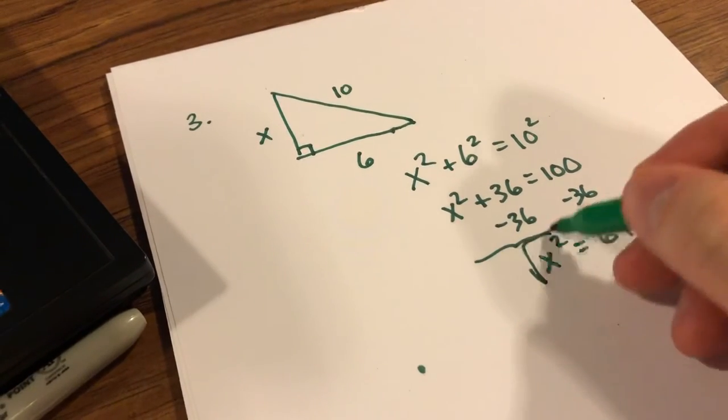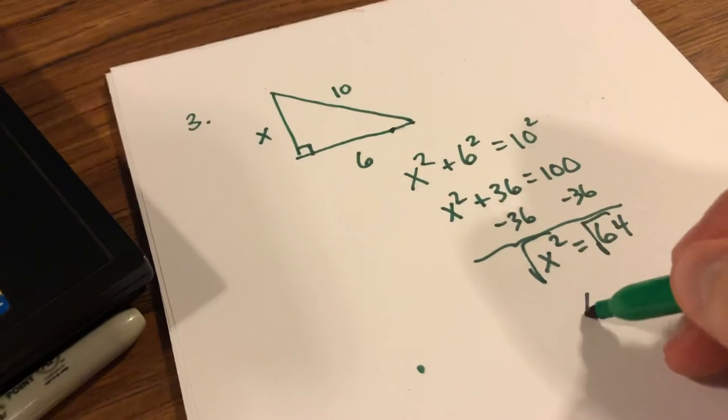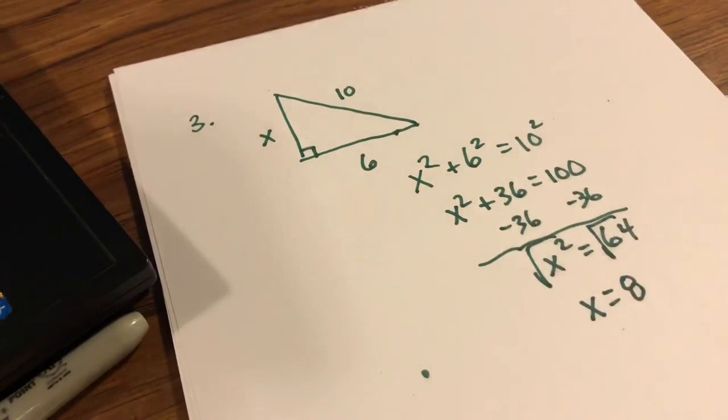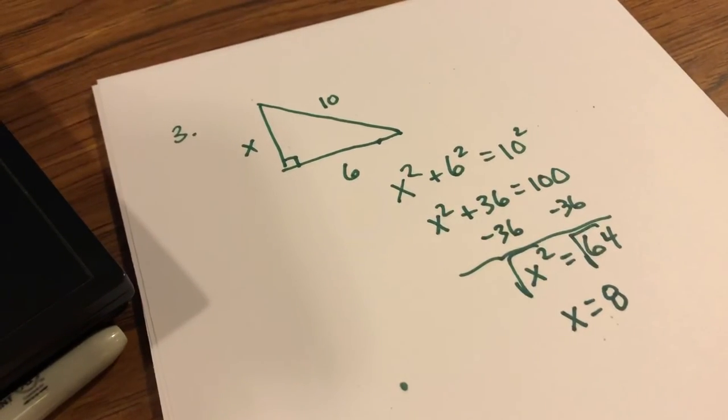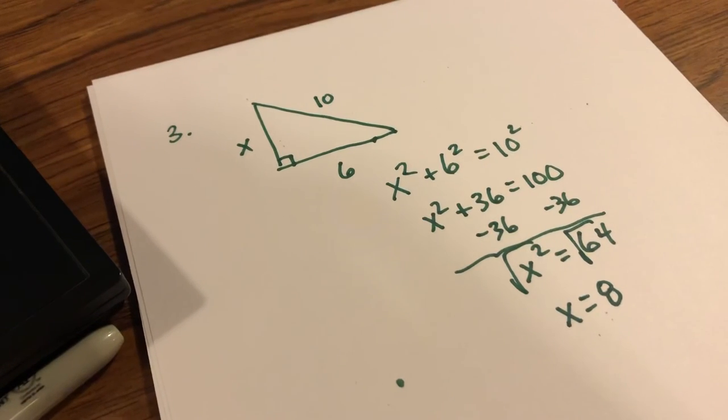And then if I take the square root of both sides, x would be equal to 8. So just a simple Pythagorean theorem problem.